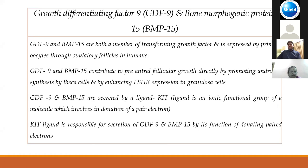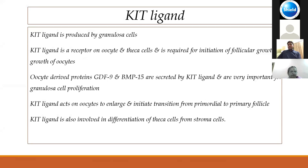Two important glycoproteins are growth differentiating factor 9 (GDF9) and bone morphogenic protein 15 (BMP15), both members of the TGF-beta family. They are expressed by primary oocytes through ovulatory follicles in humans. Both contribute to pre-antral follicular growth by promoting androgen synthesis by theca cells and enhancing FSH receptor expression in granulosa cells. GDF9 and BMP15 are secreted through kit ligand, which is produced by granulosa cells and acts as a receptor on the oocyte and theca cells.